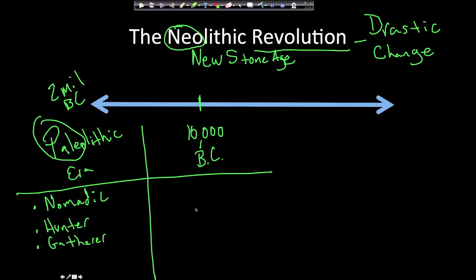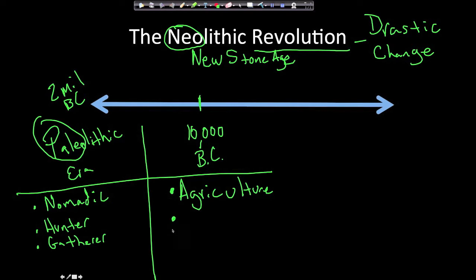Around 10,000 B.C., something happened. Nobody is really sure exactly what happened, but we do know that agriculture developed — people started farming.